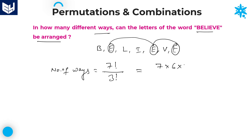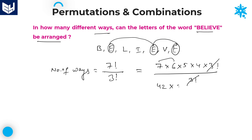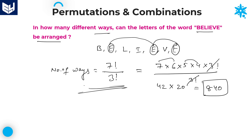So 7 factorial divided by 3 factorial: expanding gives 7 into 6 into 5 into 4 into 3 factorial, divided by 3 factorial. The 3 factorials cancel, giving 7 × 6 × 5 × 4 = 840. The required answer for this question is 840. I hope you enjoyed the session — thank you very much for watching.